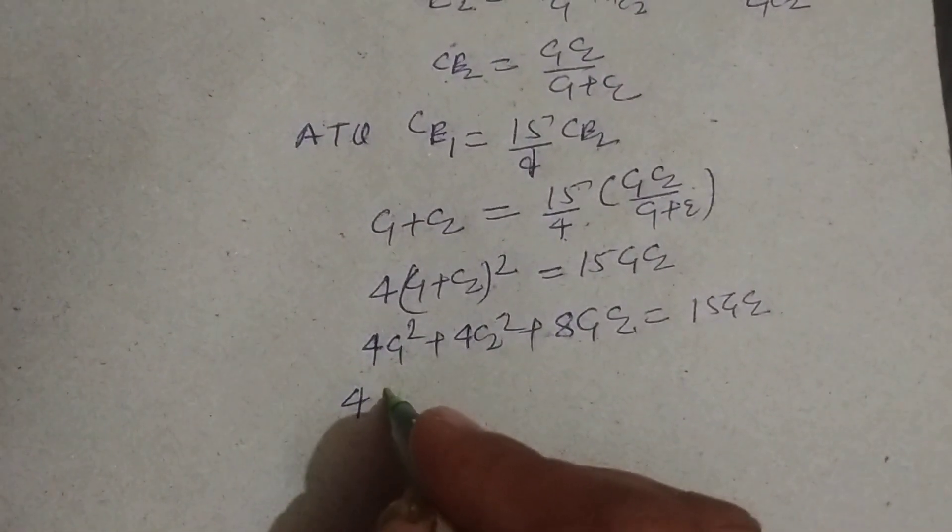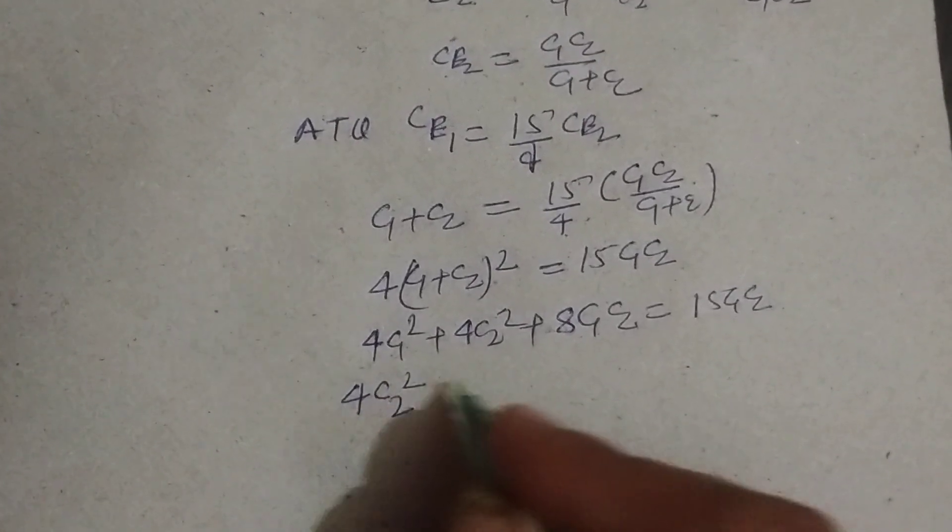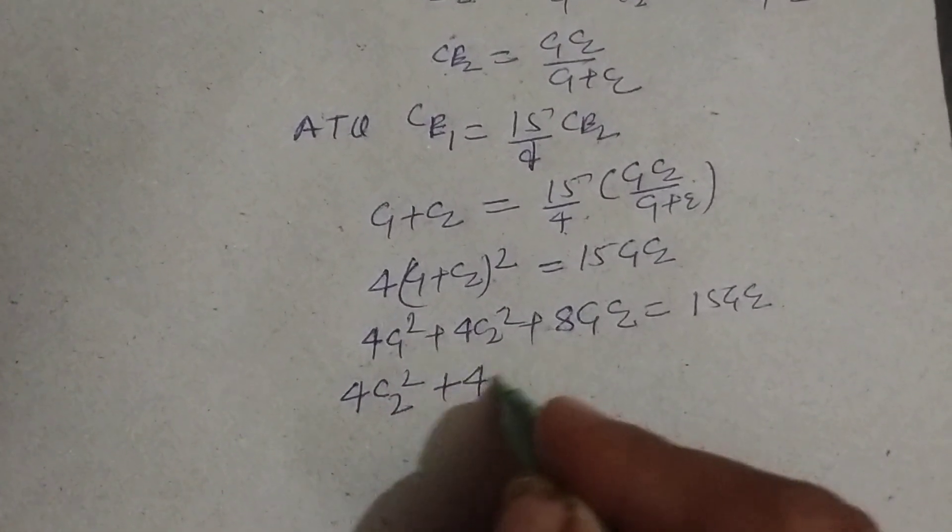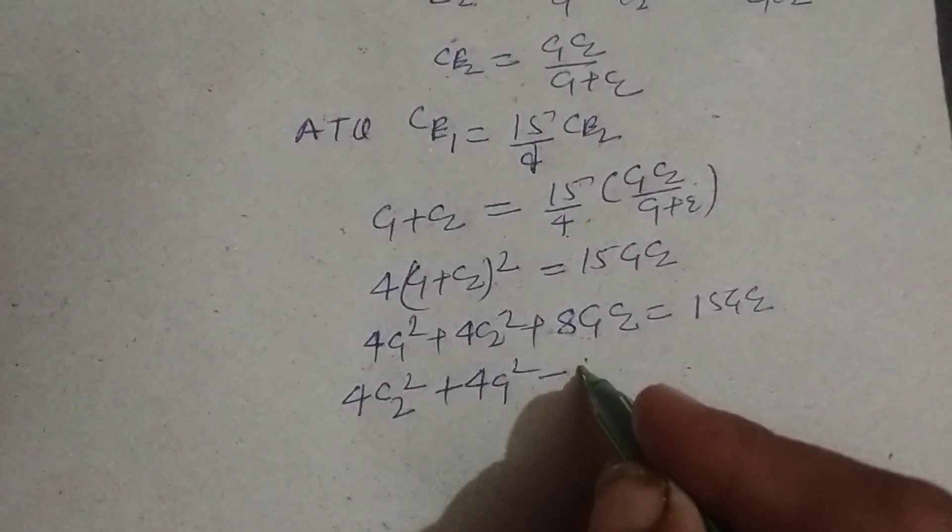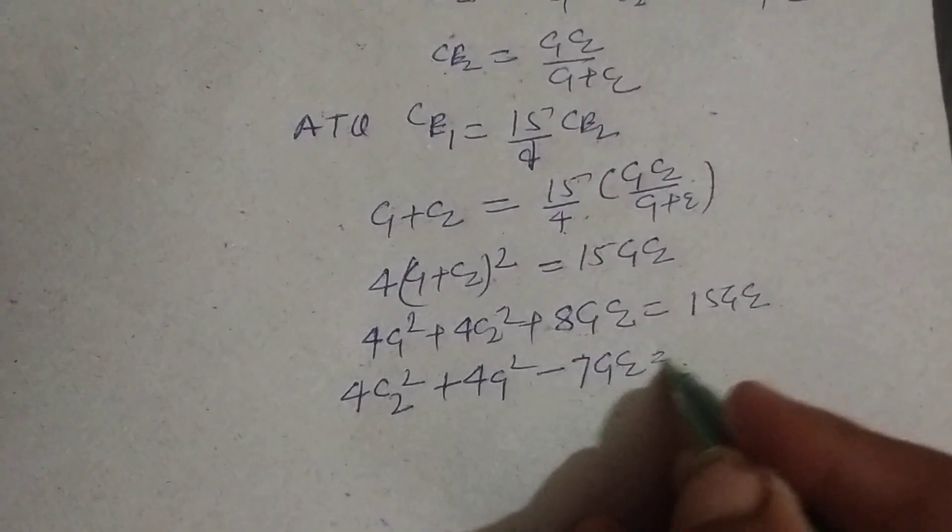Now bringing to one side, 4 C2 square plus 4 C1 square minus 8 minus 15, this is 7 C1 C2 equal to 0.